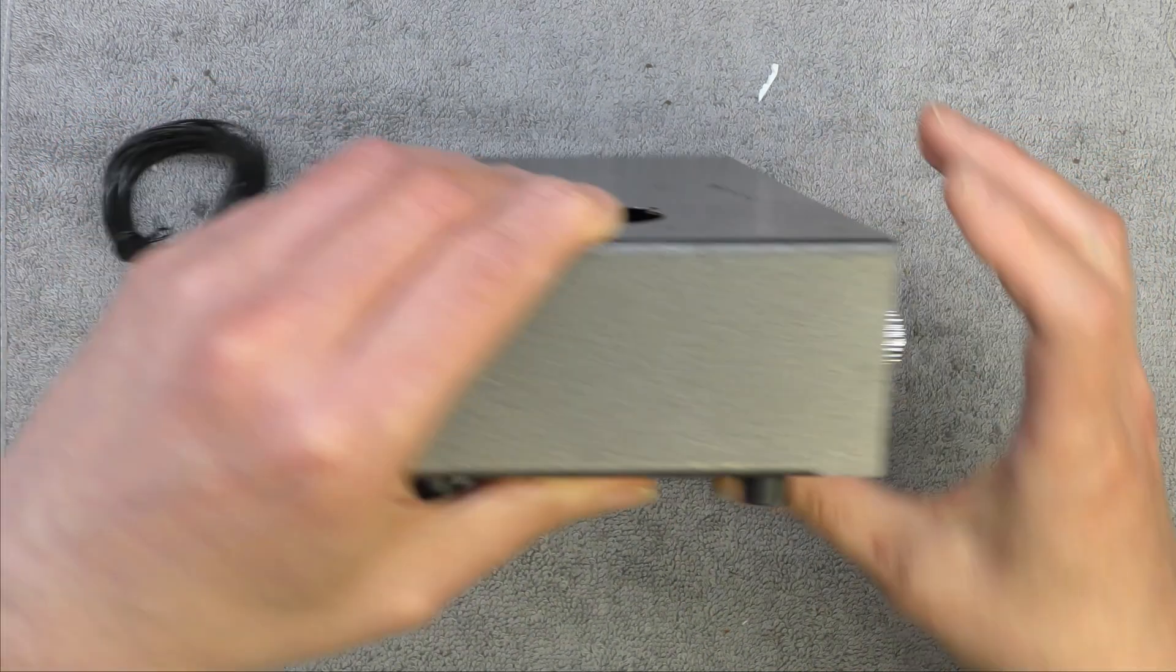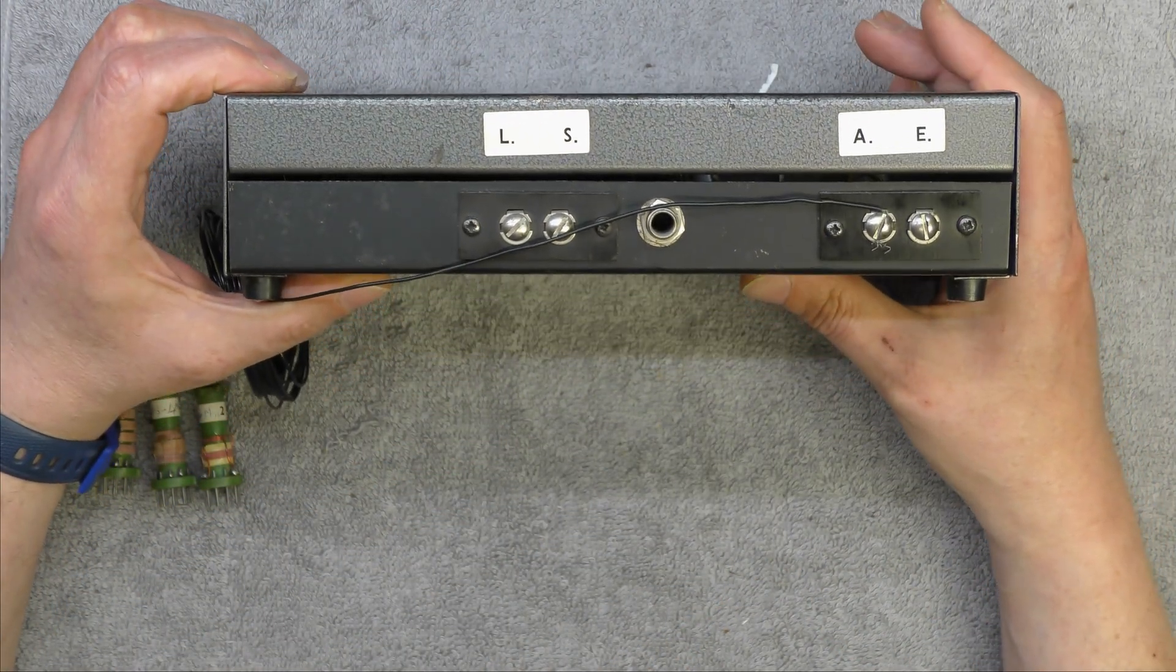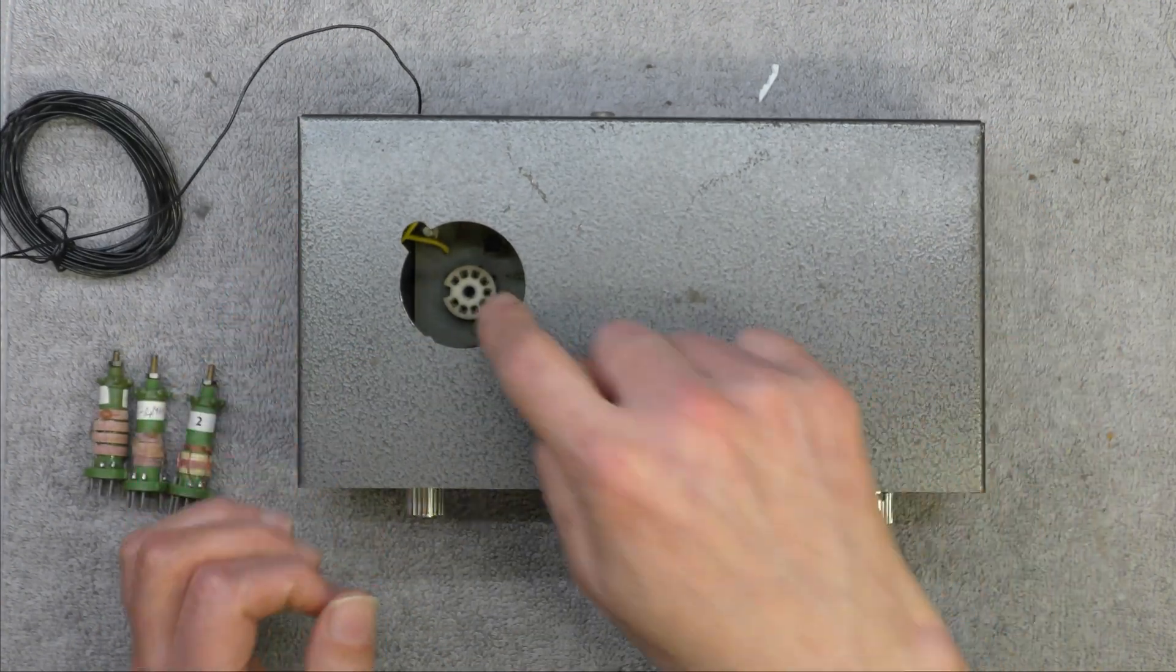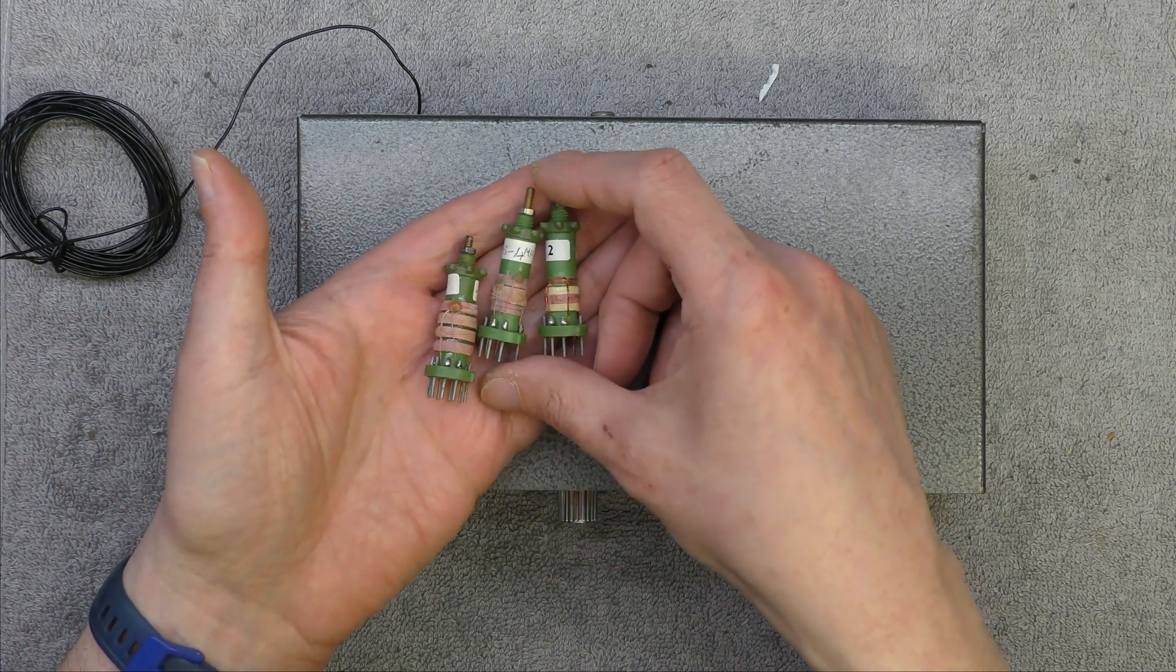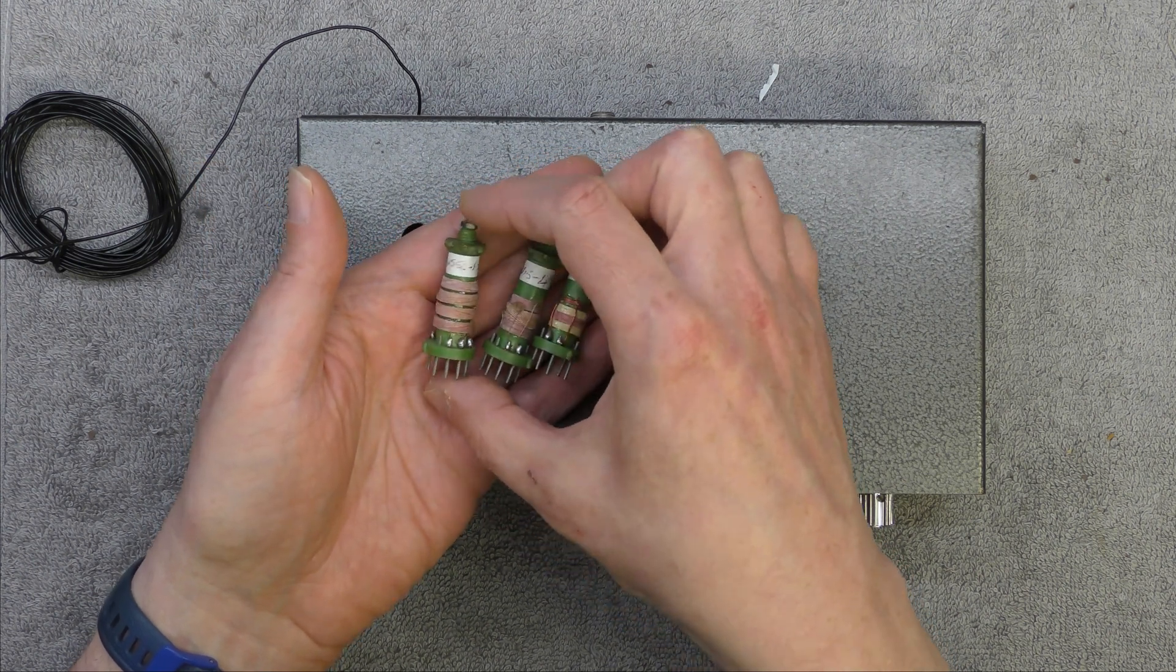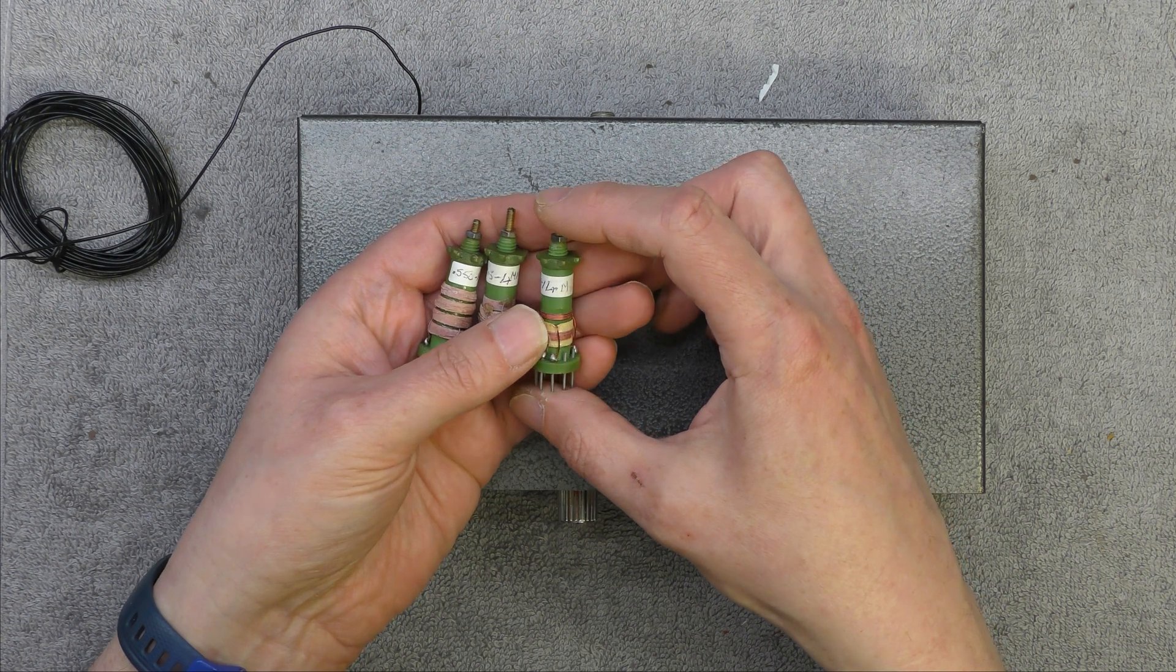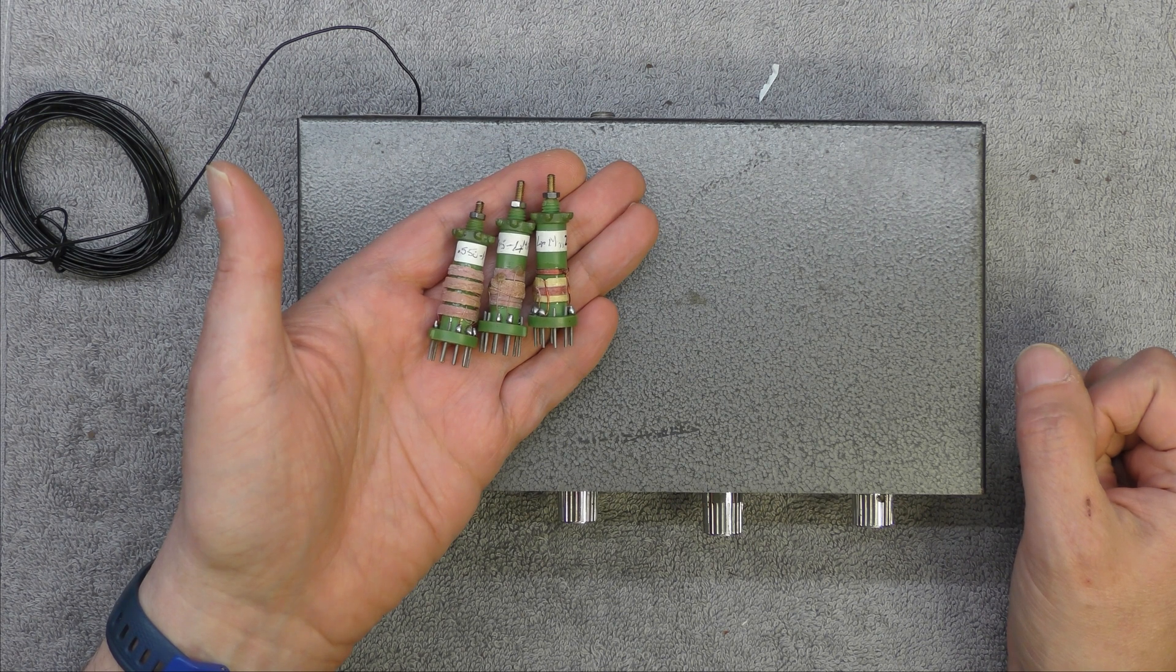Around the back we've got loudspeaker terminals, aerial and earth terminals, and a jack socket for headphones. You can see there's a valve holder there. I've got three of the four coils that would plug in there to affect a wave change. One covers medium wave, the second one is one and a half to four megahertz, and this one is four to fourteen megahertz.